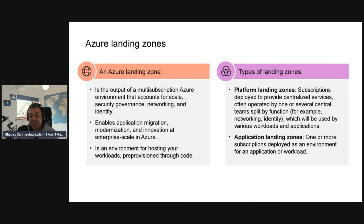This is part two of the SC-100 Microsoft Cyber Security Architect topic two. I'm trying to cover two topics, normally across two or three episodes per topic. This topic is: design solutions that align with CAF and WAF — the Cloud Adoption Framework and the Well-Architected Framework. We'll cover an introduction to Azure Landing Zones, design security for those landing zones, and then an introduction to the Well-Architected Framework before the demo.